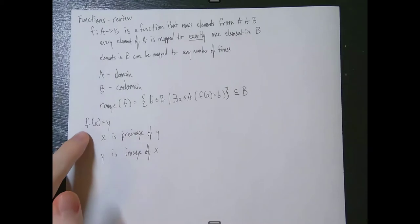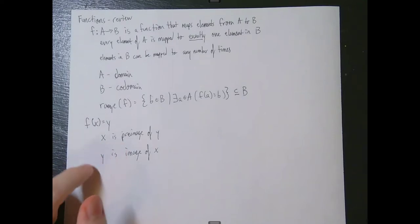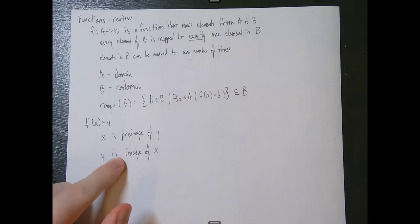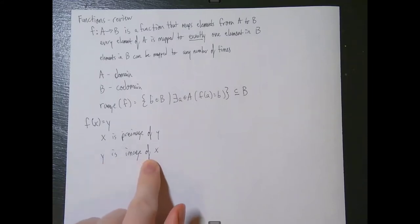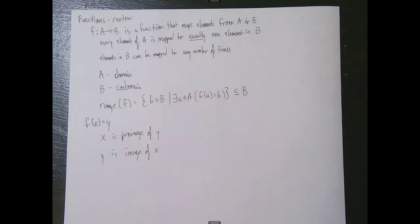Furthermore, when we have something like f(x) = y, we say that x is a pre-image of y, and y is the image of x, because an element in our domain can have only one image since it's mapped to only one element in the codomain. That's a brief review of everything covered in the intro to functions video.